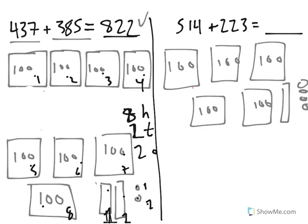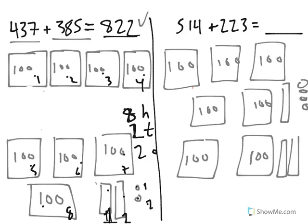And we're going to add in 223. That means two more 100s, two more tens, and three ones.